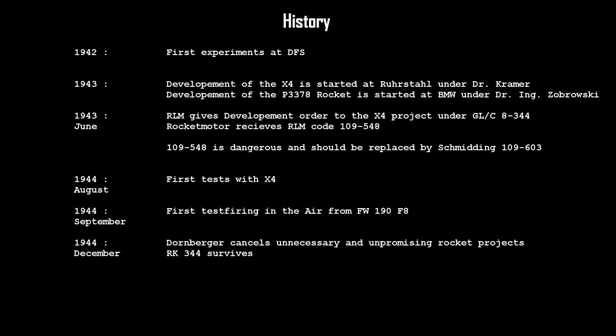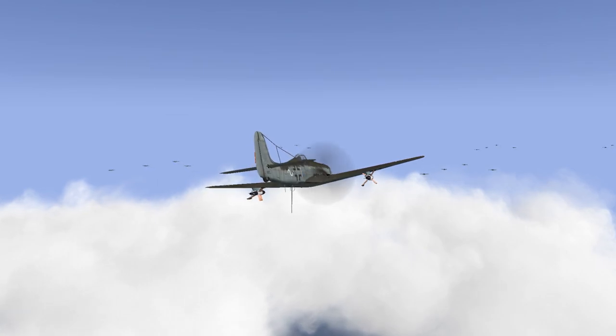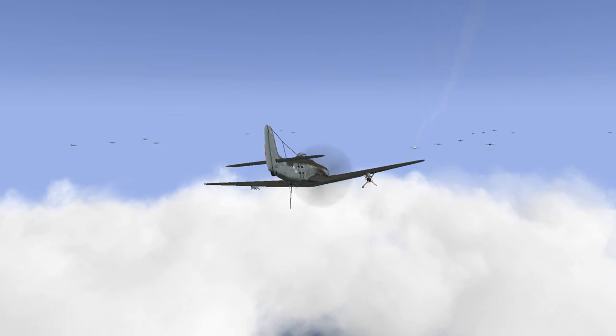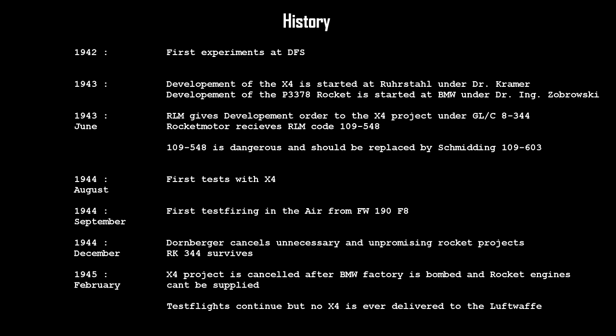The air-car 344 project survived General-Major Dornberger's cancellation wave in December 1944, but was terminated on February the 6th after the BMW factory in Stargard was bombed and all rocket motors at this plant were lost. Test flights continued after the cancellation and there are unconfirmed claims that the Ruhrstahl X4 was test-fired in a combat situation. At least 224 X4s were built with another 1000 nearing completion. No X4 was officially delivered to the Luftwaffe.